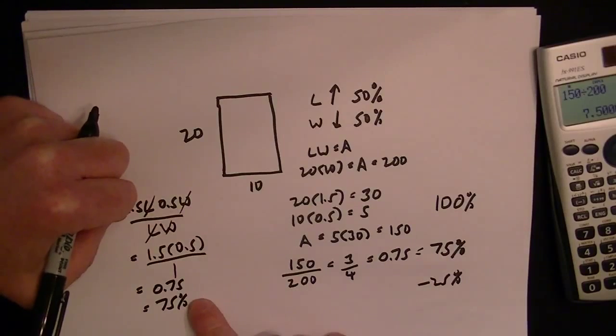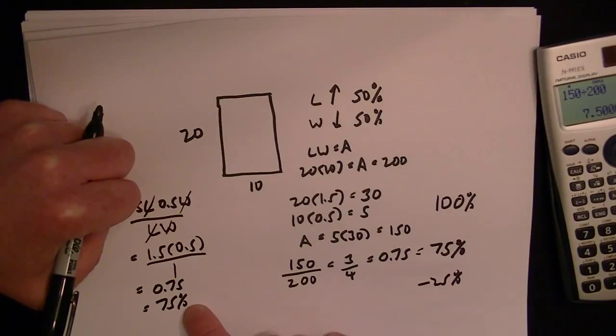So 0.5 times 1.5 equals 0.75 or 75%. This is saying, as we said before, that the area of the new garden is 75% the size of the original, which means the size has dropped by 25%.